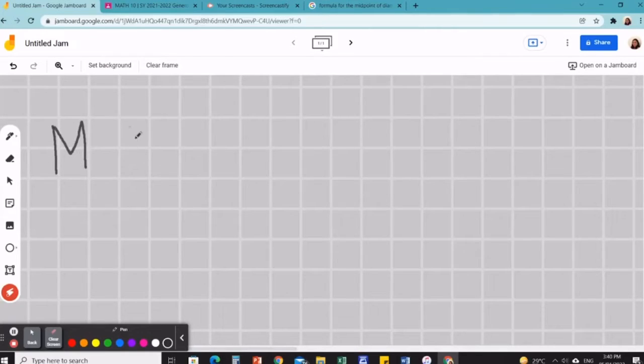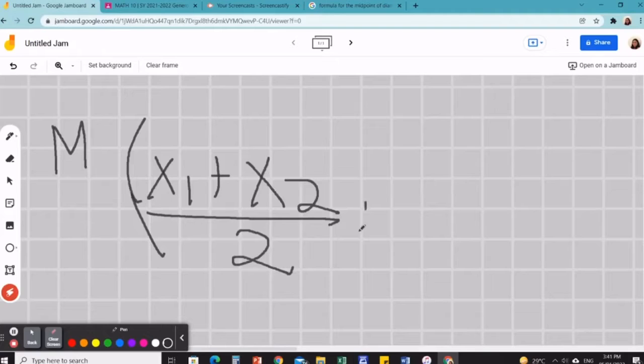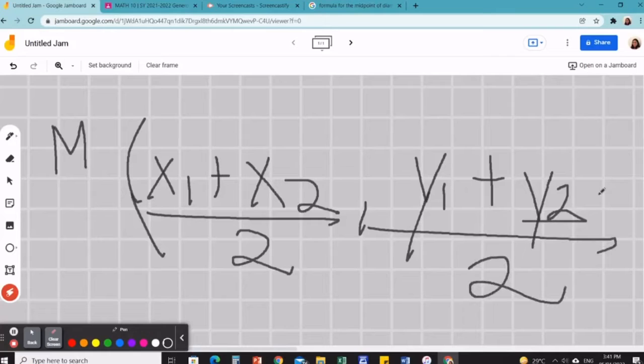That stands for midpoint, so this is the formula. x sub 1 plus, oh this has to be bigger, x sub 2 over 2 and y sub 1 plus y sub 2 over 2. Close parenthesis. And that's it.